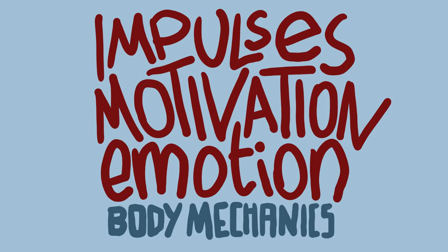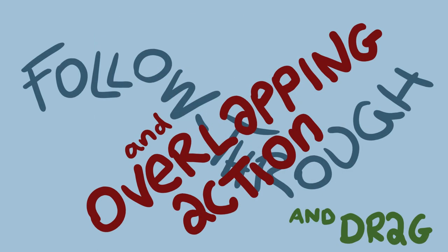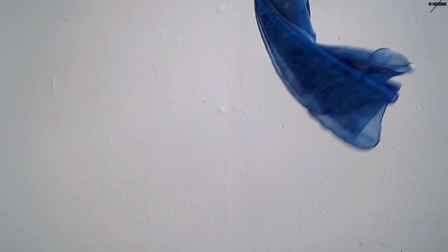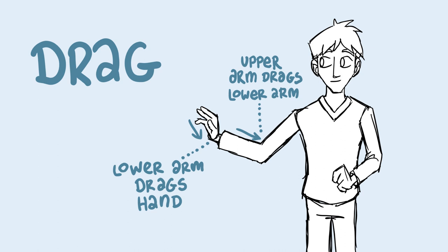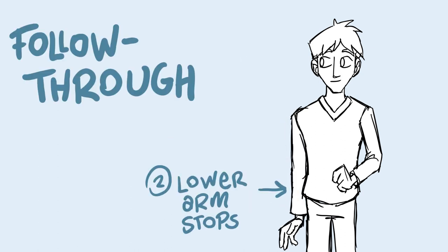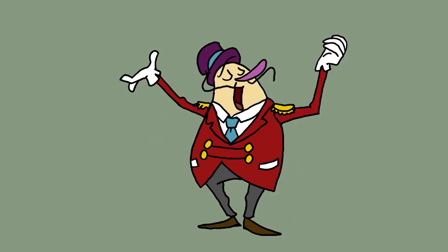But physically believable does not equal a good performance. Acting choices, character motivations and emotions should always be the main driving factors of your animation. Principles like overlapping and follow through only assist you in bringing a realistic mass to your character. Master this and you can make your audience feel the weight and gravity of a world that does not really exist.